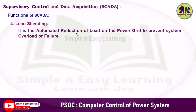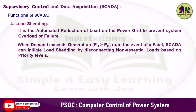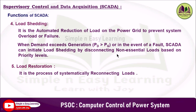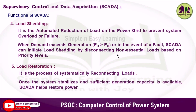The fourth function is load shedding — an automated reduction of load on the power grid to prevent system overload or failure. When demand exceeds generation or a fault occurs, SCADA can initiate load shedding by disconnecting non-essential loads based on priority levels, helping maintain grid stability and prevent widespread blackouts. The fifth is load restoration, a process of systematically reconnecting loads previously shed during a disturbance. Once the system stabilizes, SCADA restores power to affected areas following predefined priorities, ensuring a safe, efficient and orderly recovery while minimizing downtime.